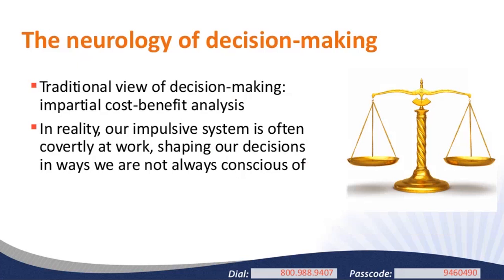Our traditional view of decision-making is that our logical system has full reign—this comes largely from economics, which assumes people impartially assess benefits and costs and choose the option that maximizes benefits relative to costs. In reality, our impulsive systems often exert strong influence on our decisions. Our logical systems tell us we should exercise because the health benefits outweigh the costs—money for a gym membership, time, or the sheer physical discomfort of running a few mornings a week. But this logical analysis still doesn't stop our impulsive side from hitting the snooze button rather than going running.